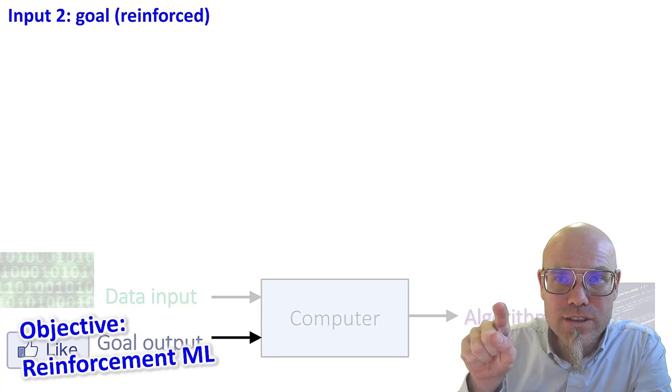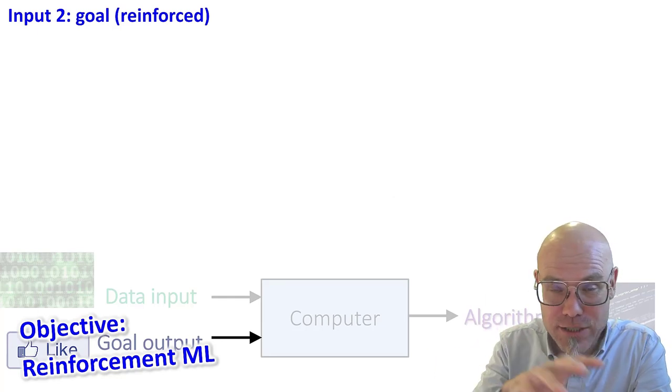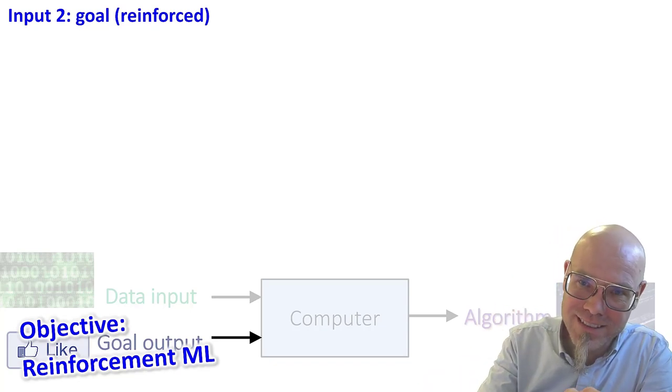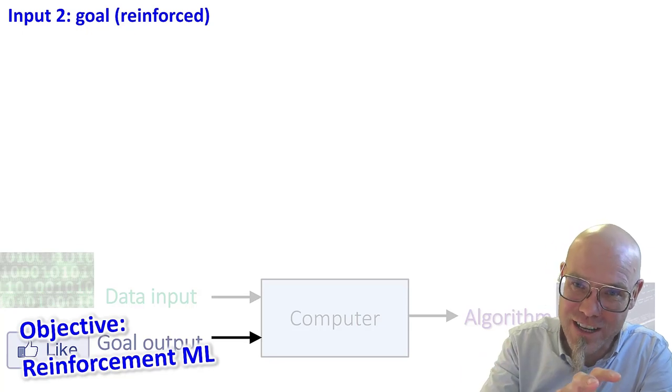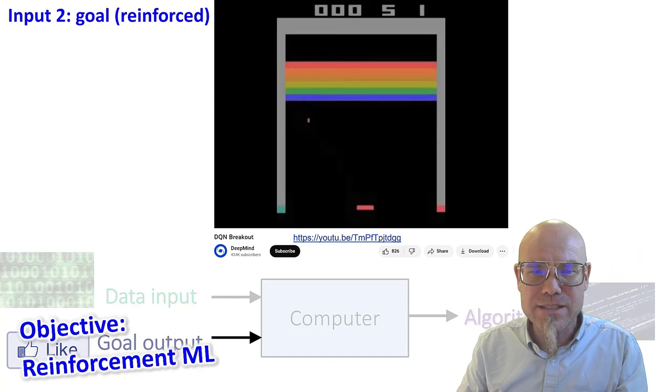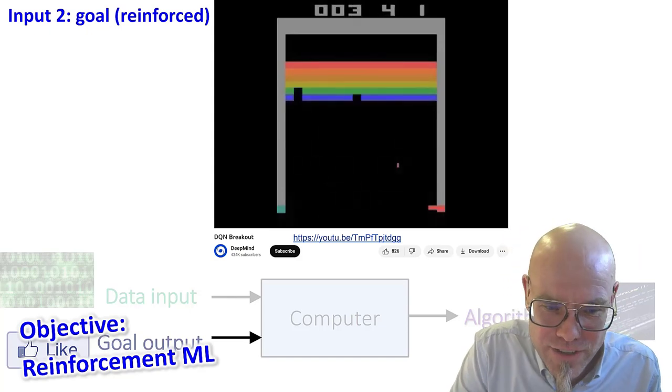And it explores itself how to navigate that landscape, it explores this environment, this landscape, and I give it rewards or punishments. So reward function or loss function for achieving a certain goal. So for example, this is a famous example here of DeepMind.